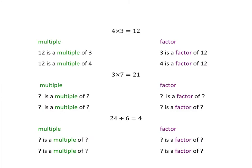Check you've got these ideas right by looking at the following questions. The first one we've done: 4 times 3 is 12, so 12 is a multiple of 3 or a multiple of 4, and 3 is a factor of 12, or 4 is a factor of 12. Now, we know that 3 times 7 is 21 — make up the sentences for multiple and factor that go with that.